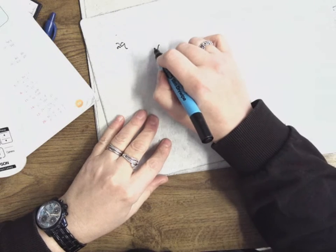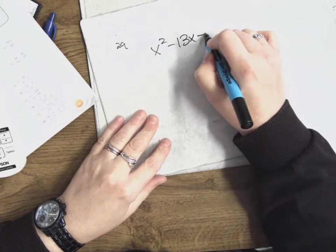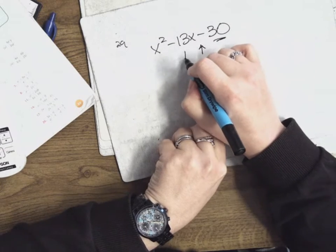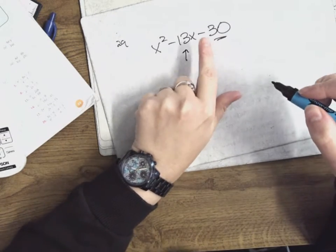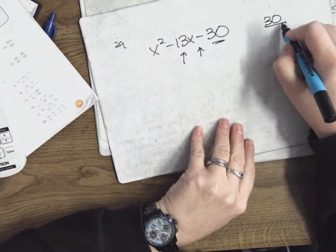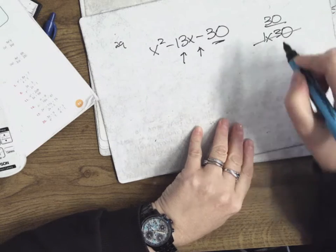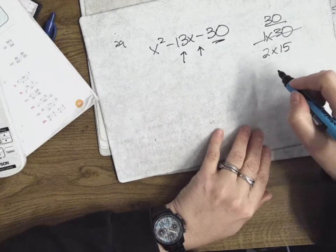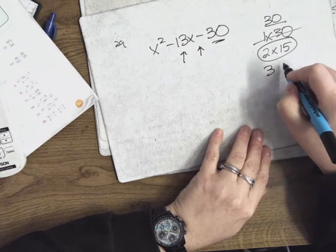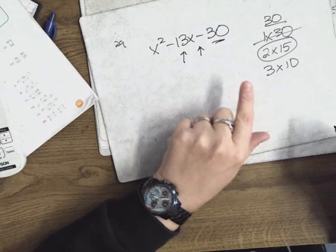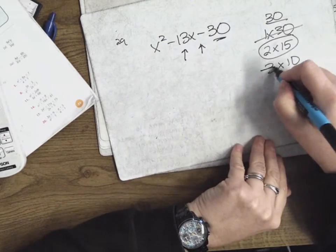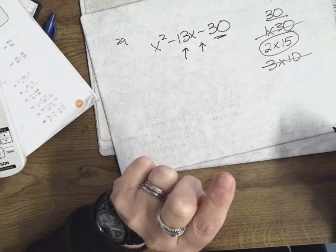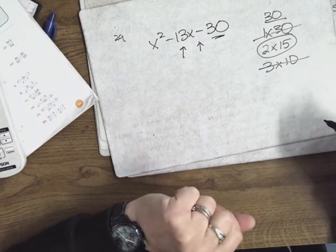So 29 is x squared minus 13x minus 30. You're looking for the factors of 30 that subtract to give me 13. Factors of 30: 1 by 30 — they subtract to give me 29, so that's not it. 2 by 15 — yes, they subtract to give me 13. 3 by 10 — now they add to give me 13, but I want them to subtract. So it's not 3 by 10 — they threw that one in just to test you. And 5 by 6 — they subtract to give me 1, so it's not those. So it's 2 and 15.